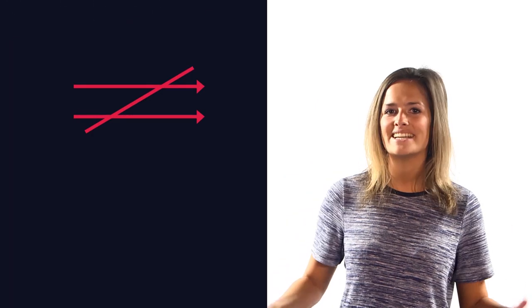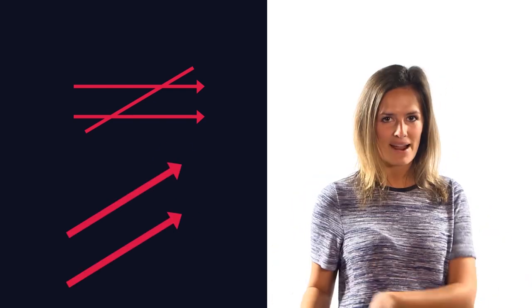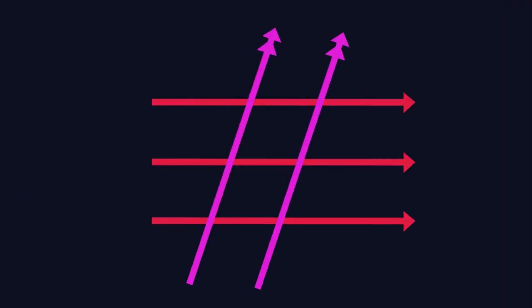Parallel lines are always the same distance apart and they never meet. We use arrow heads to show that lines are parallel. See how these lines have one arrow.